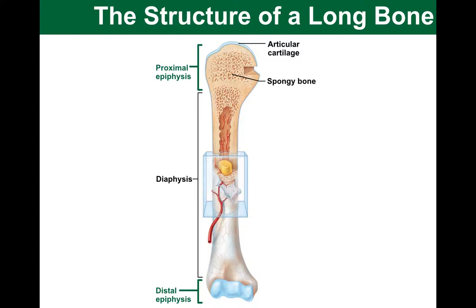Next, I want to introduce the epiphyseal line. This is often known as our growth plate in children and adolescents, and this is where the major growth of bone length happens from. In adults, the epiphyseal plate is replaced with the epiphyseal line. In fact, it is one of the characteristics that we often use when defining the age of a skeleton.